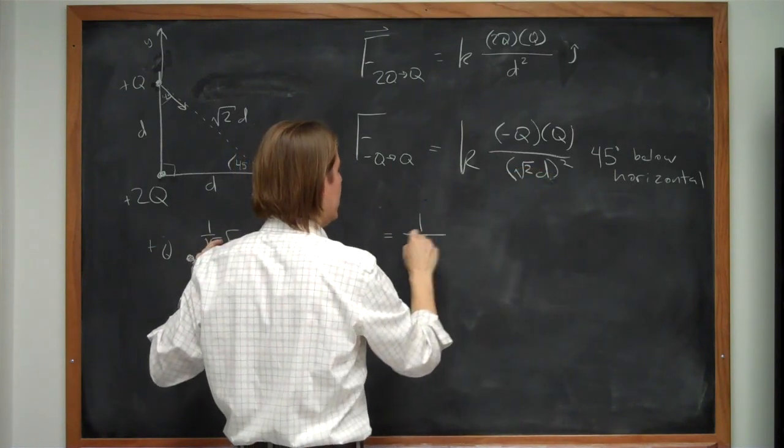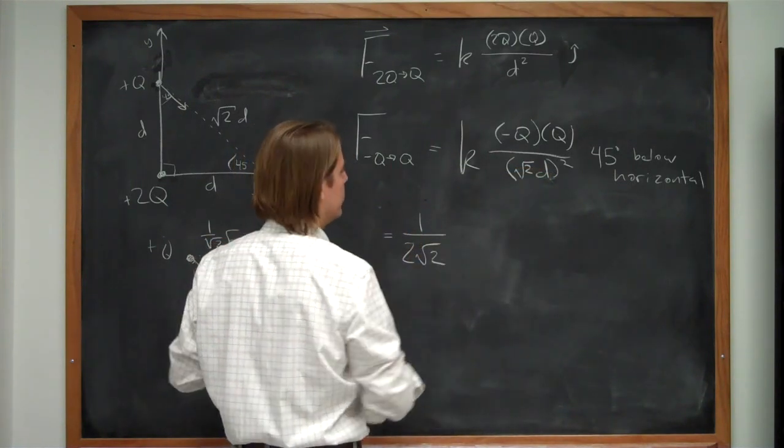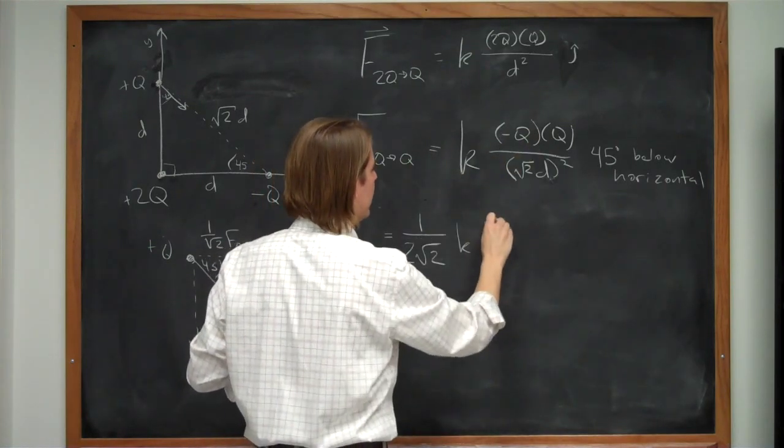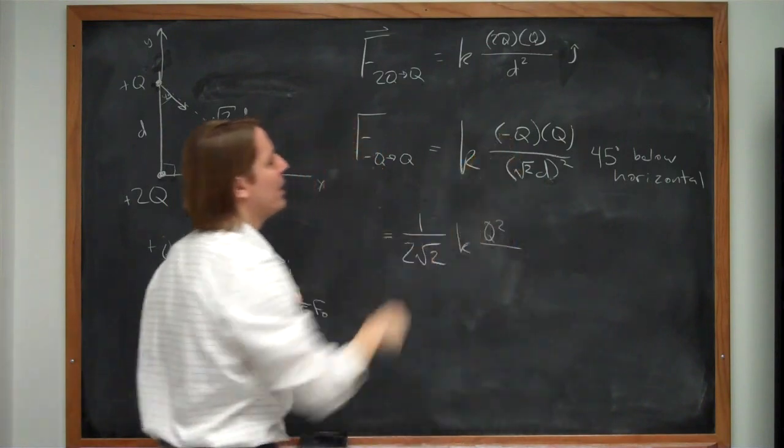And this is 1 over the square root of 2. So we combine those. We get 1 over 2 times the square root of 2. And then we just keep all the rest. Okay. The q's get squared.